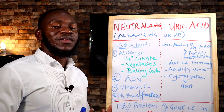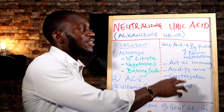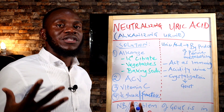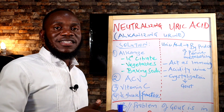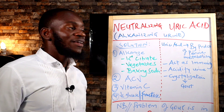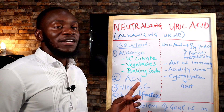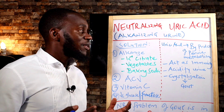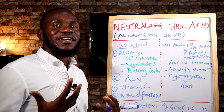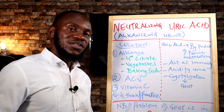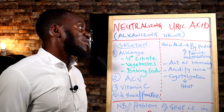Uric acid — the substance responsible for causing gout — is a byproduct of protein metabolism. Proteins are broken down to purines, and purines are broken down to produce uric acid as the end product. Accumulation of uric acid in your system precipitates, specifically when your urine pH is low, meaning it's acidic. The crystals then settle in your joints and cause pain — that is gout.